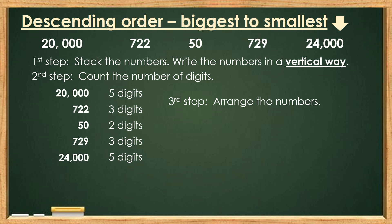We can see that the number 50 only has 2 digits, so it should be the smallest number. But remember, we have to arrange it from biggest to smallest, so let's put the number 50 on the right-hand side.